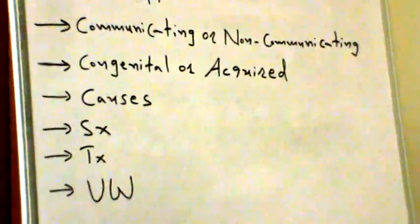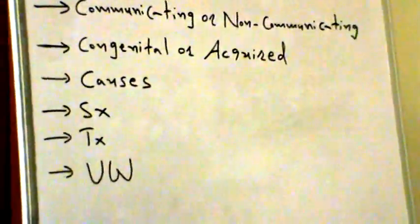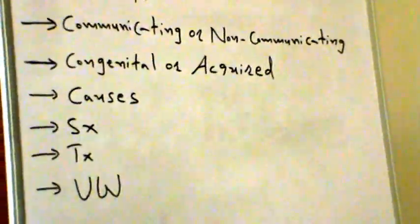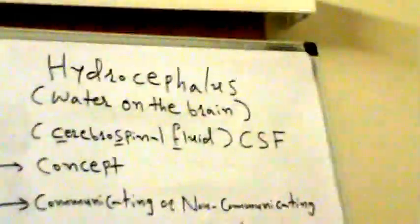Brain injury occurs every 15 seconds in this country, and in some cases leads to the development of hydrocephalus. There are approximately 75,000 discharges per year from hospitals in the United States with a diagnosis of hydrocephalus.